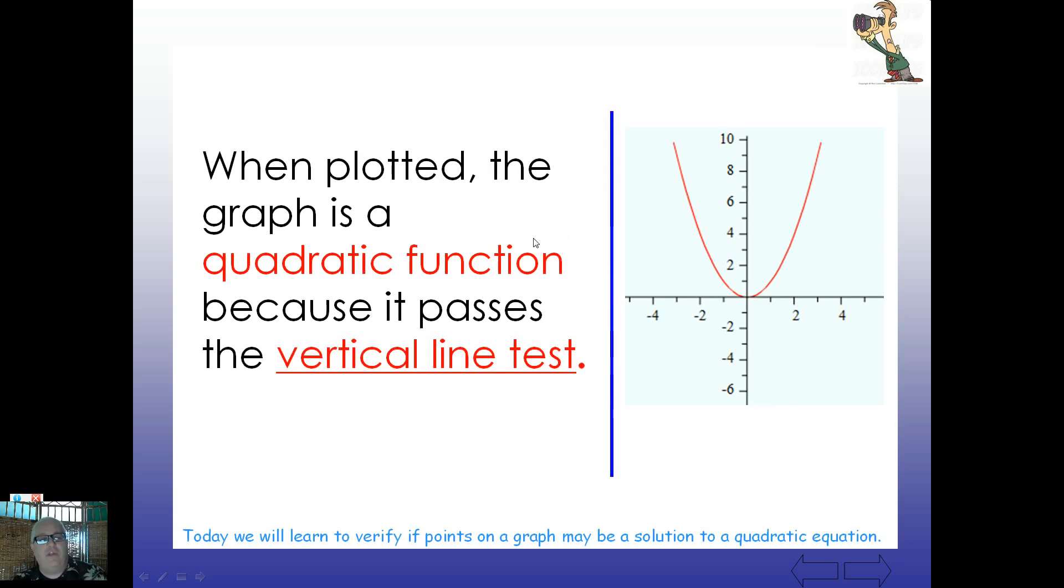When plotted the graph is a quadratic function because it passes something called the vertical line test. The vertical line test is something that we'll have to understand. In algebra 2 and pre-calculus they will really bring this forward. But I want to introduce this to you now. This will be something we're responsible to know.